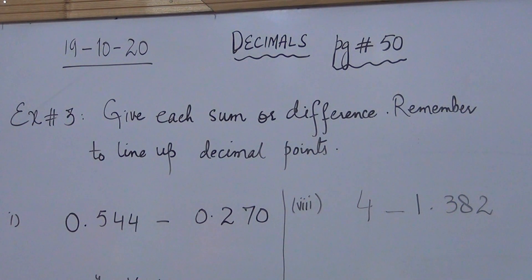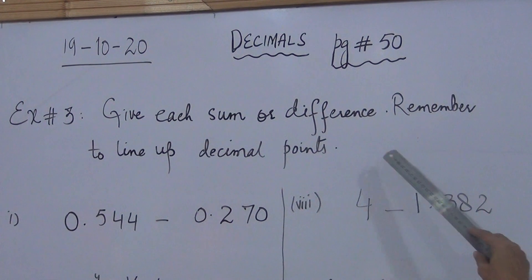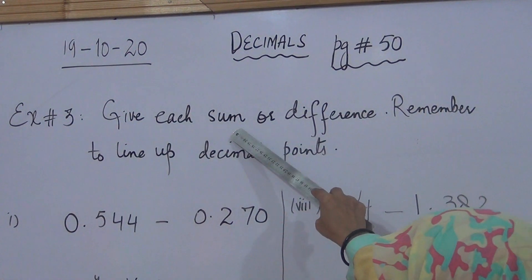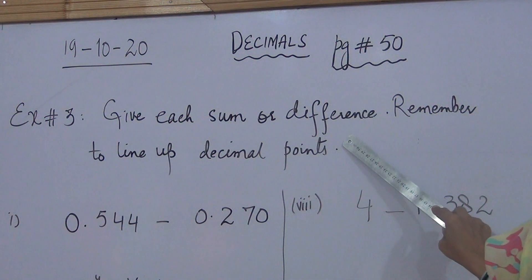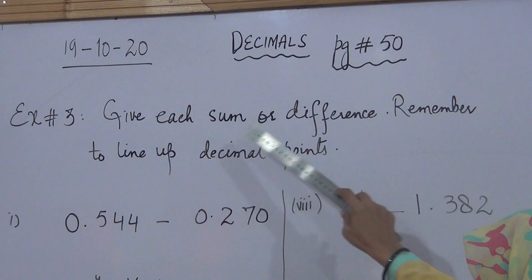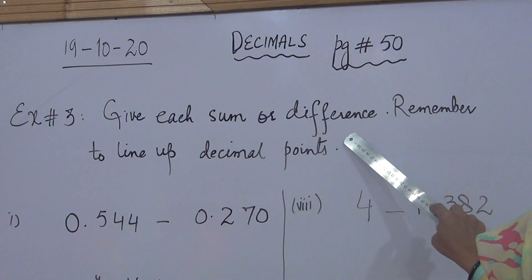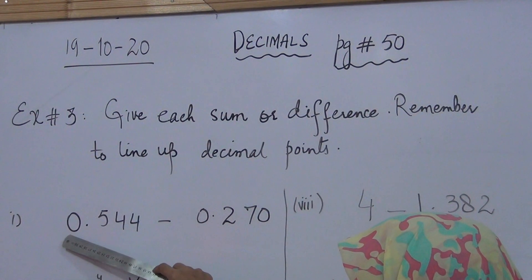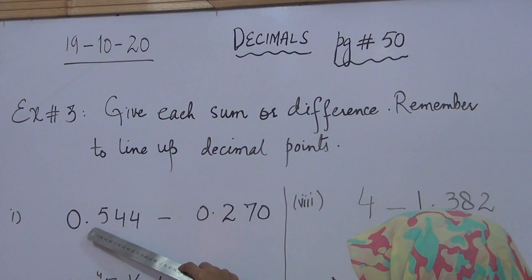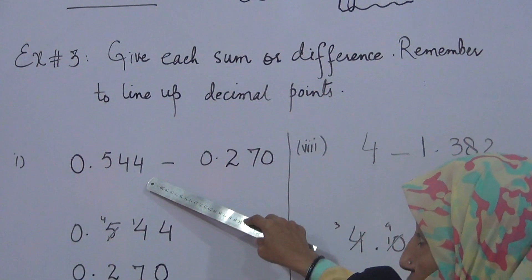We have to find the sum of decimal numbers or find the difference. What is the sum? Sum is the answer of addition. And what is difference? Difference is the answer of subtraction. We have already learnt there are two parts of decimal number. The number before decimal point is the whole number. And number after decimal point is the fractional part.